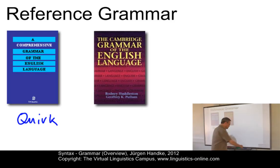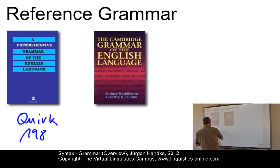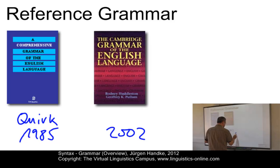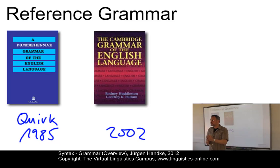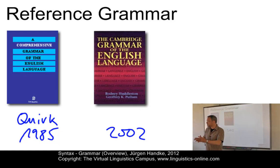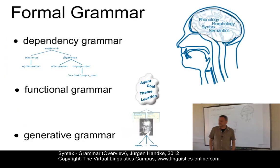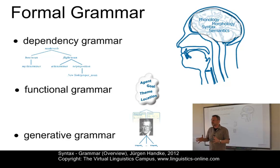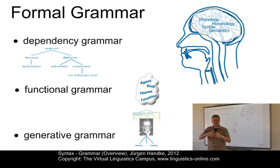That grammar was published in 1985. In 2002, another English reference grammar was published, which systematically draws on the linguistic research carried out on English since the 1950s, especially research within the context of theoretical grammar. In theoretical linguistics, the term grammar is synonymous with the theory of language, incorporating insights from all branches of linguistics, from phonology to semantics with syntax in the center.